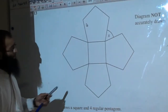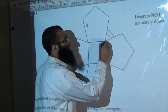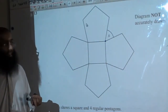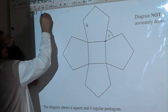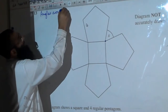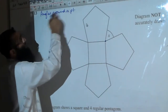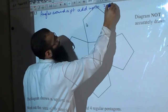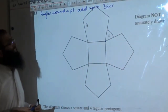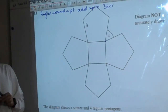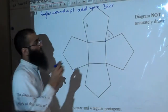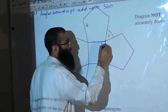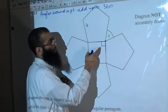This question is worth 3 marks. What do we know? Angles around a point add up to 360. Now we should know something straight away — what is the angle in the corner of a square?